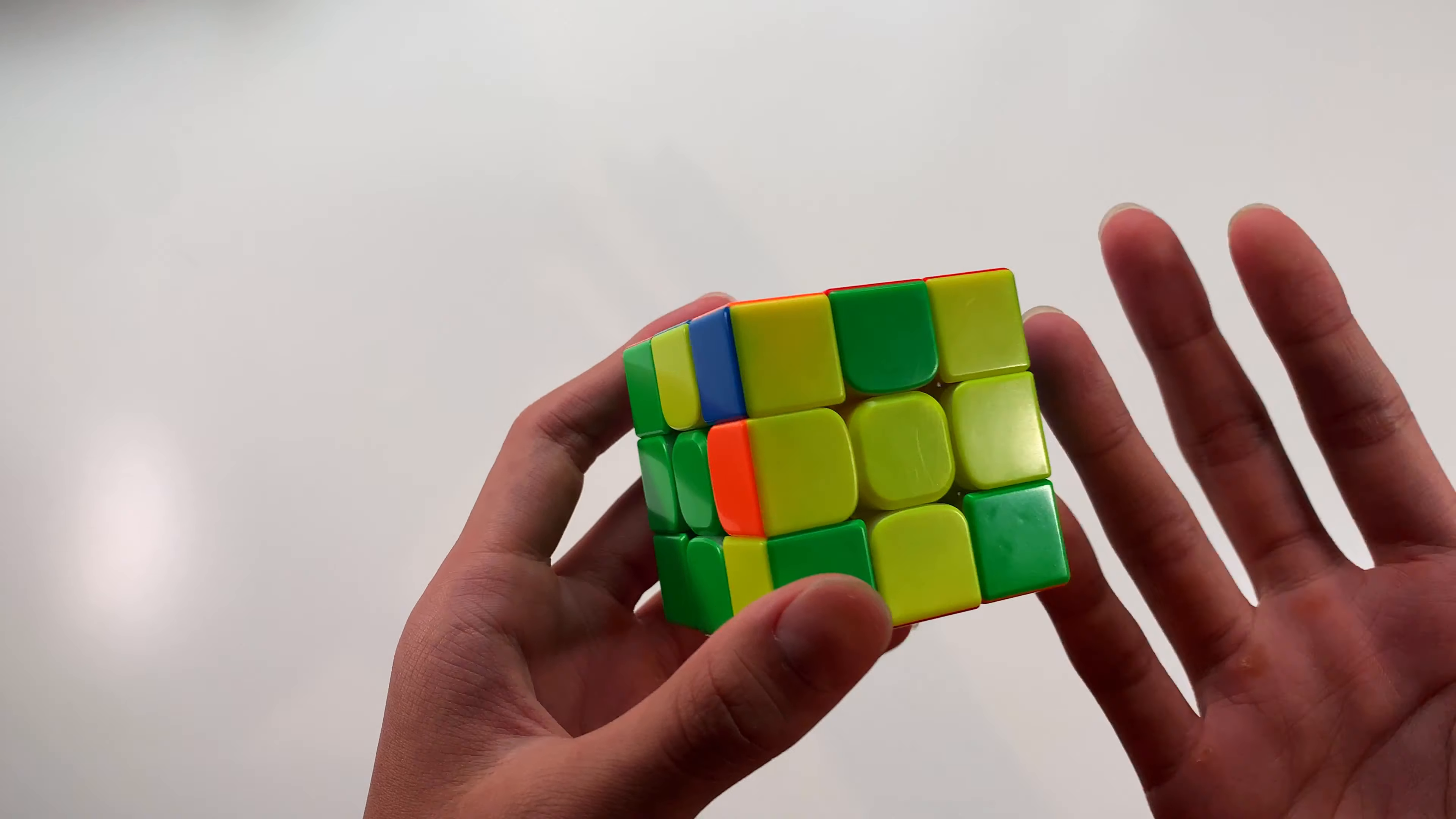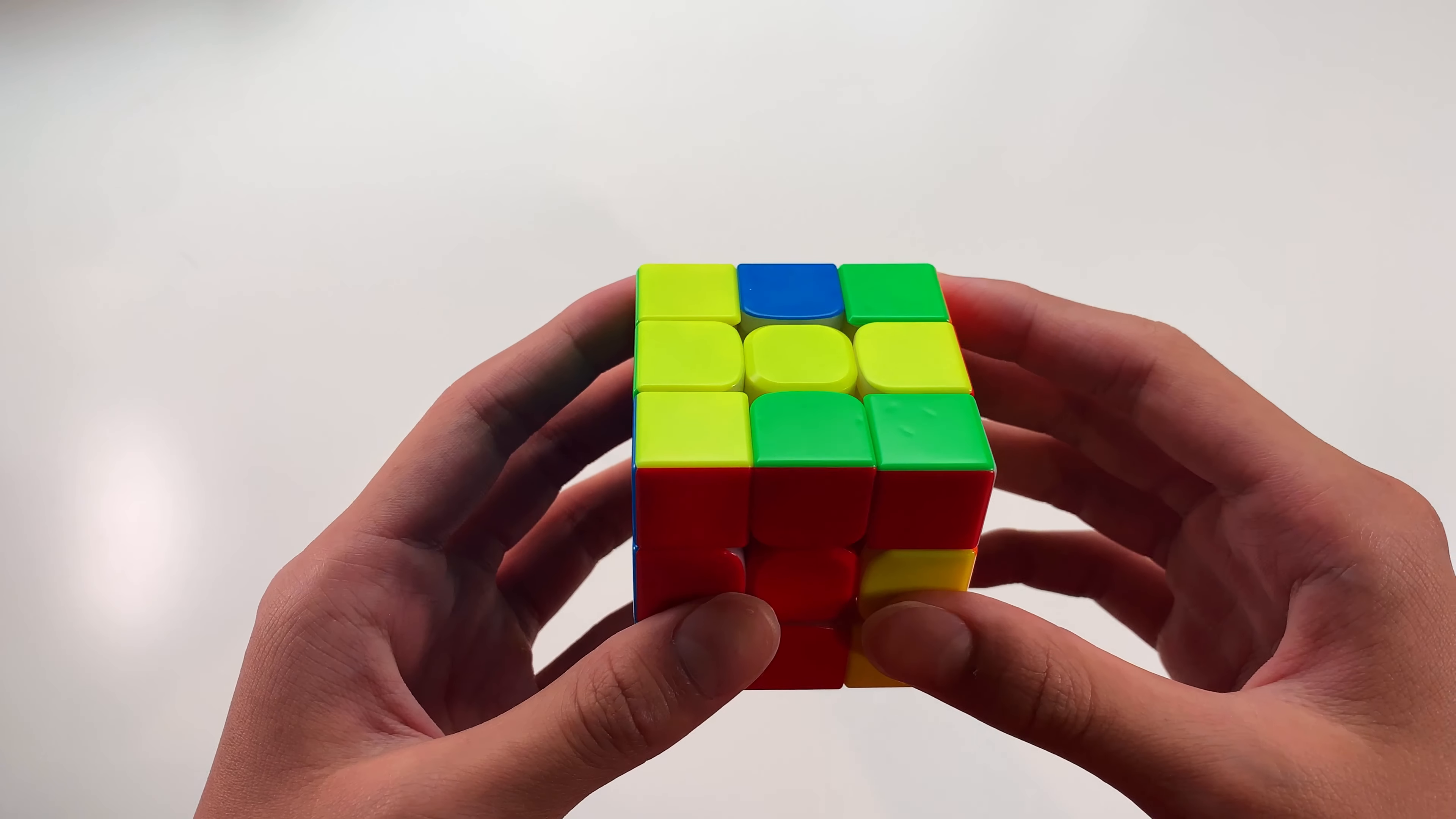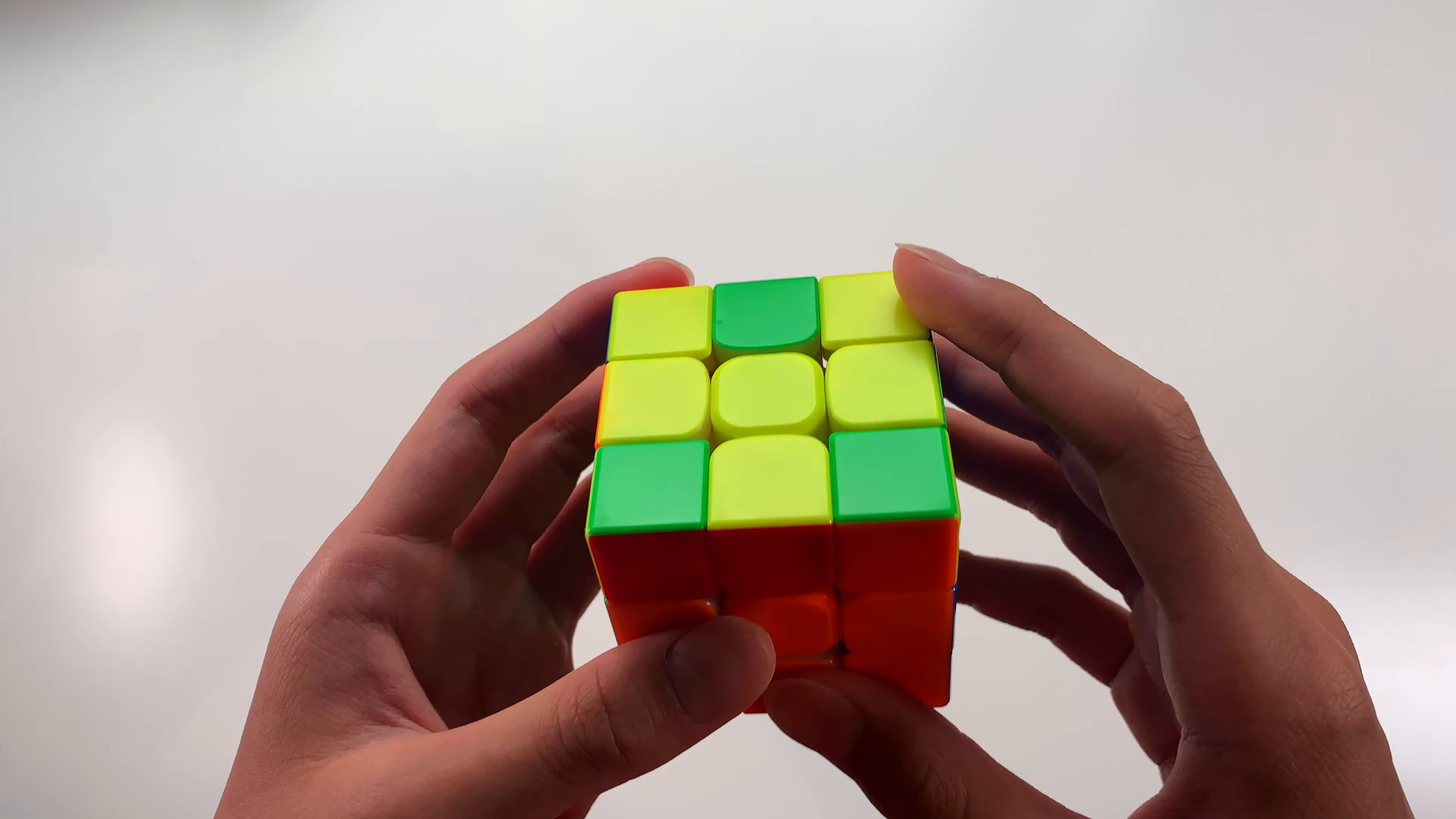What I see a lot of people do in this case is from this angle they rotate twice x2, pair this up like the beginner method, do another rotation to insert it. That's three rotations, that is way too many just to solve one pair.